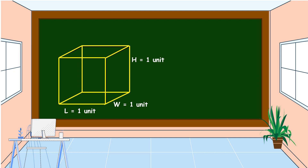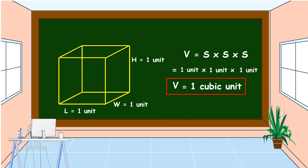What do we call the number of cubic units in an object? Yes, we call it volume. When we say volume, it is the number of cubic units in an object. Since the cube has the same length, width, and height, volume is equal to side times side times side. Substituting the values: one unit times one unit times one unit — the volume of this cube is one cubic unit.